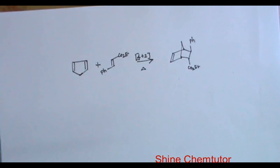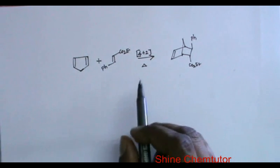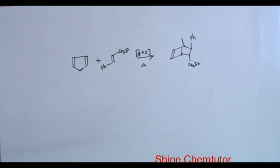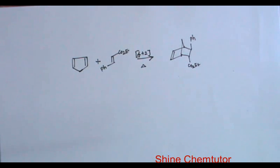Is there any possibility to get a 2+2 cycloaddition product? 2+2 cycloaddition product is more favored under photochemical condition. But here it is Lewis acid, and under this condition we will get 4+2 cycloaddition.